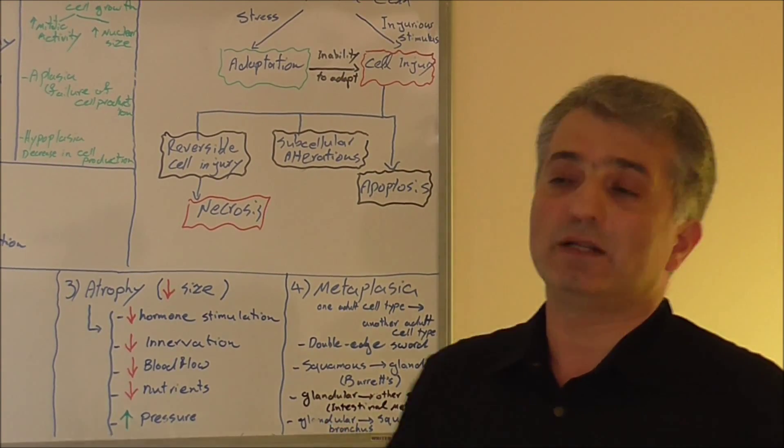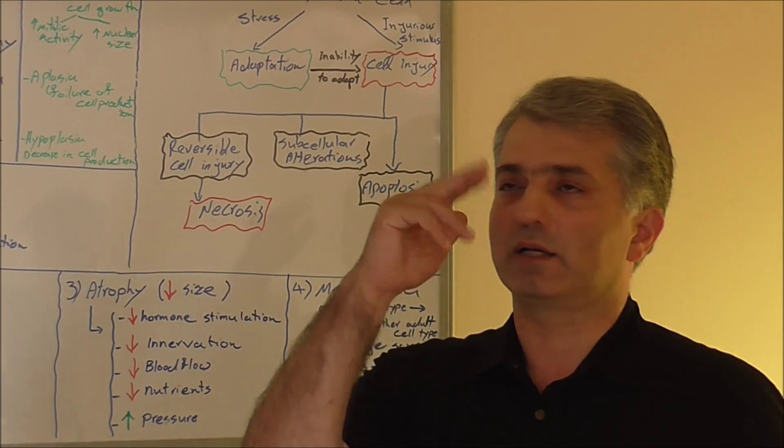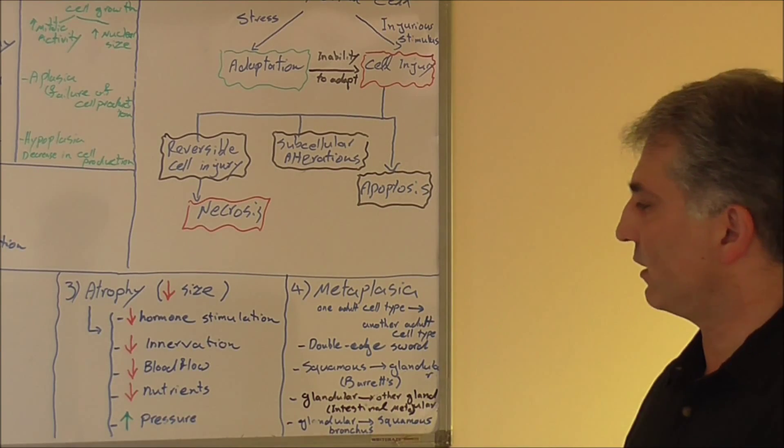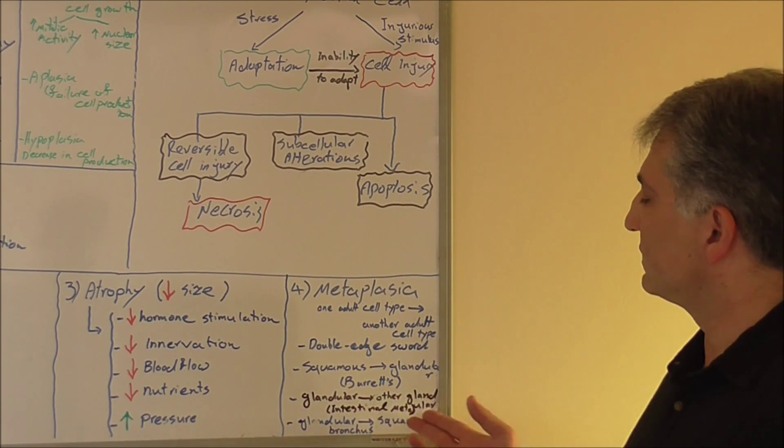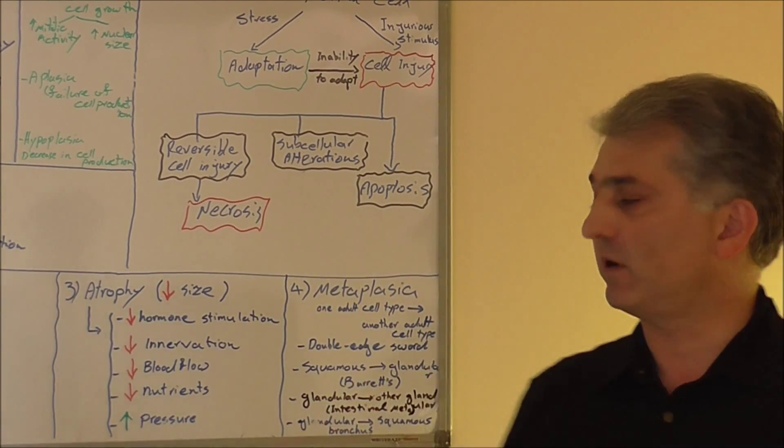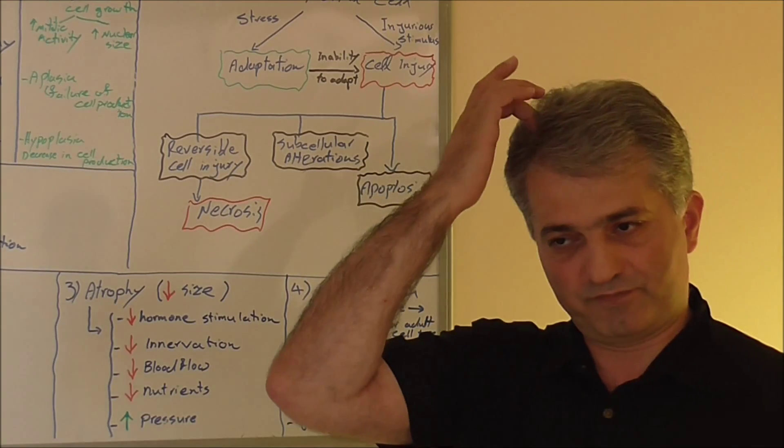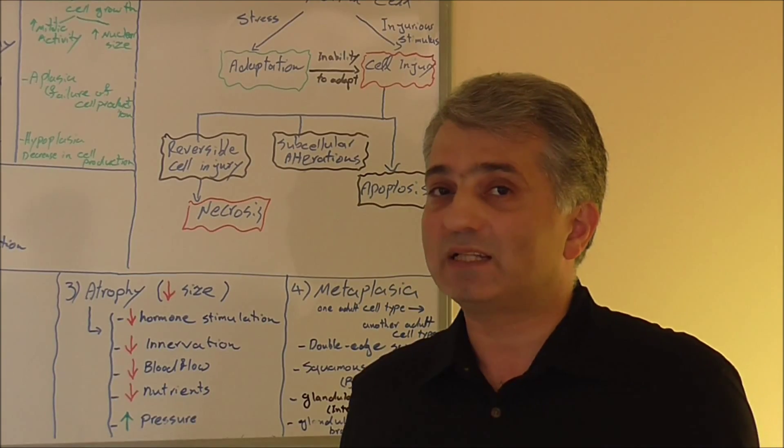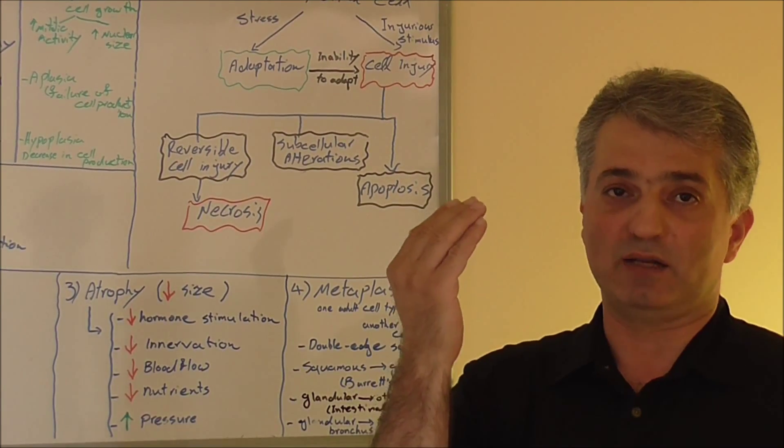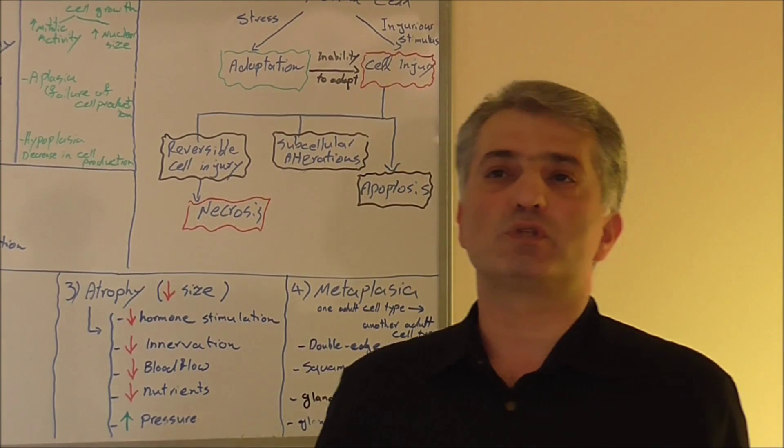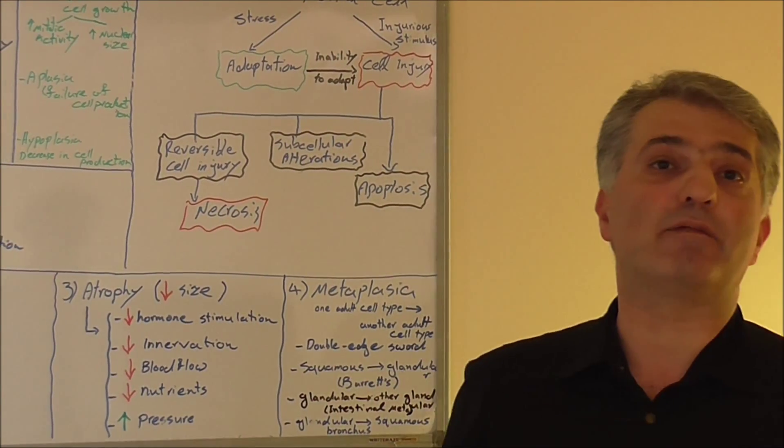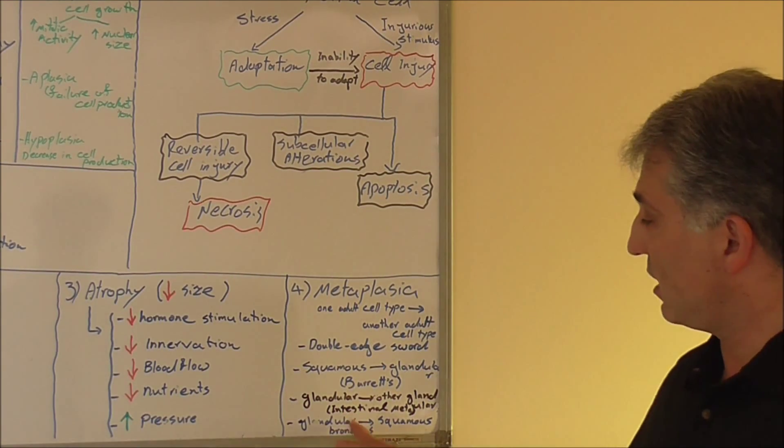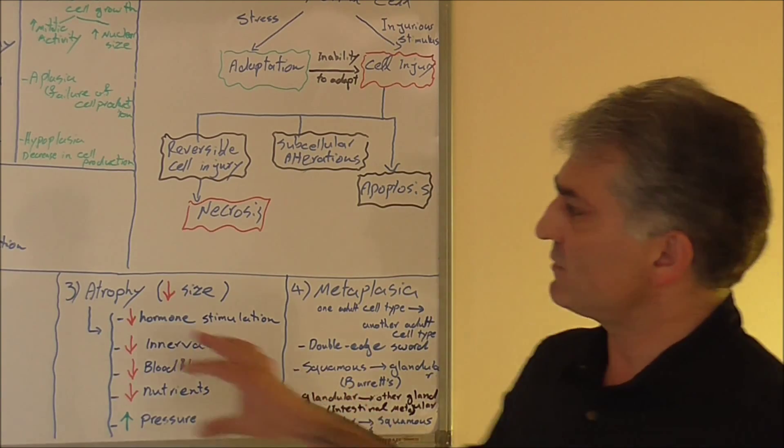The bronchus, we have glandular, and some of them have cilia for cleaning the airway. But exposure to smoke, people who are smoking for long term, it changes the nature of the cell, and from glandular it changes to squamous. That's why they lose that cilia, the function of cilia. Because of that reason, because they cannot clean the airway very well, they change their function. Those people who smoke have more sputum compared to other people. The reason is they lost the function of these cells. So these four are the major adaptations.